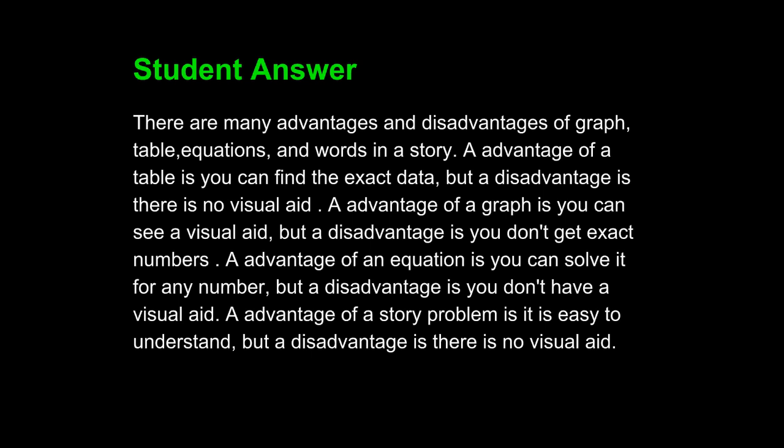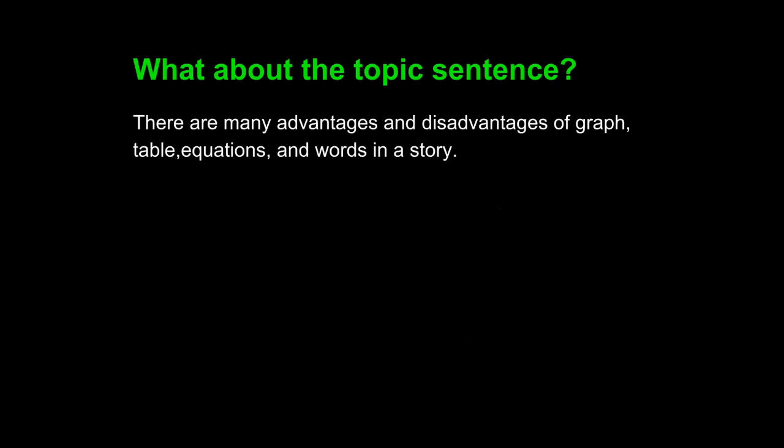This paragraph demonstrates a few writing flaws. We can take a look at the writing flaw of using 'A' in front of advantage, but that is minor and can be easily fixed. Let's look at more important structural flaws in this paragraph, starting with the topic sentence. The student has written: there are many advantages and disadvantages of graph, table, equations, and words in a story.